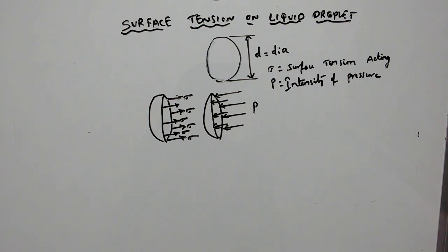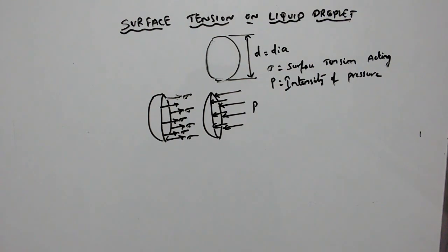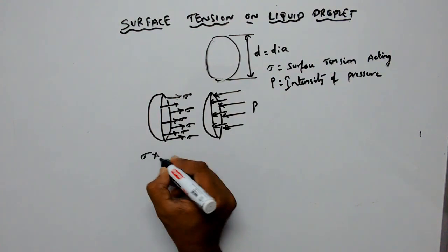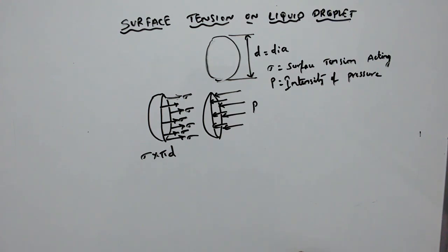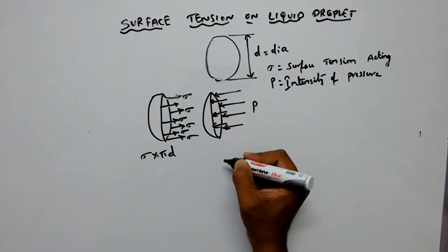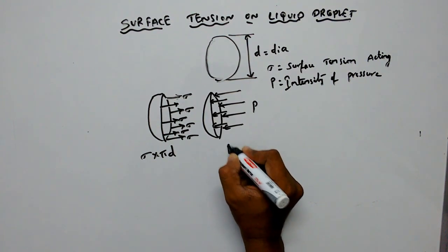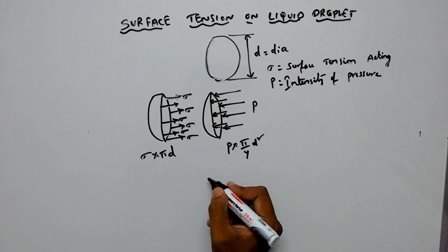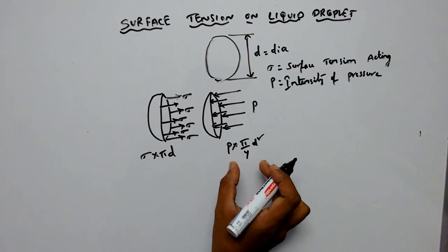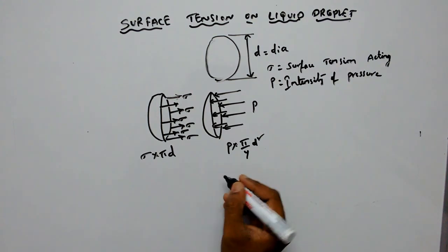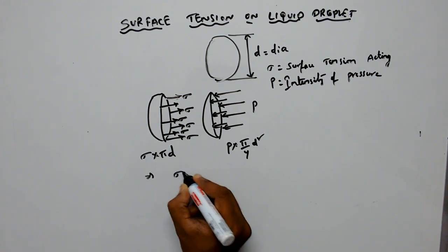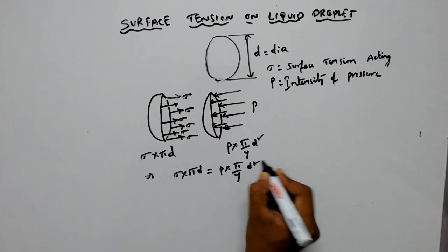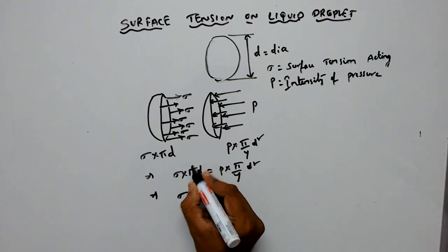Because of this, surface tension tensile forces are developed whose magnitude is Sigma into pi d, which corresponds to the circumferential area. Because of this intensity of pressure, pressure forces are developed whose magnitude is P into pi by 4 d squared. Under equilibrium conditions, the surface tension and the intensity of pressure should be equal, that is Sigma into pi d equals P into pi by 4 d squared.